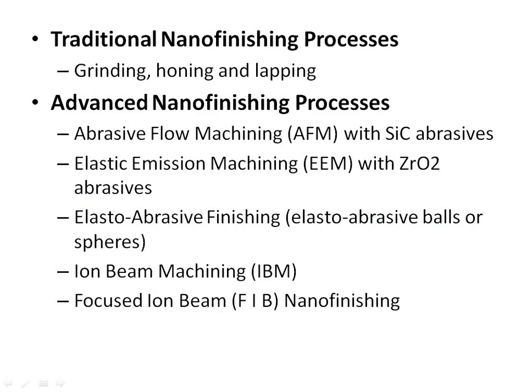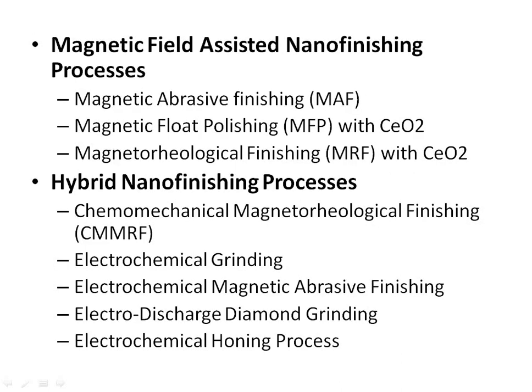Traditional nanofinishing processes include grinding, honing, and lapping. Advanced nanofinishing processes include: abrasive flow machining (AFM) with SiC abrasives; elastic emission machining (EEM) with ZrO2 abrasives; elasto-abrasive finishing using elasto-abrasive balls or spheres; ion beam machining (IBM); and focused ion beam (FIB) nanofinishing.